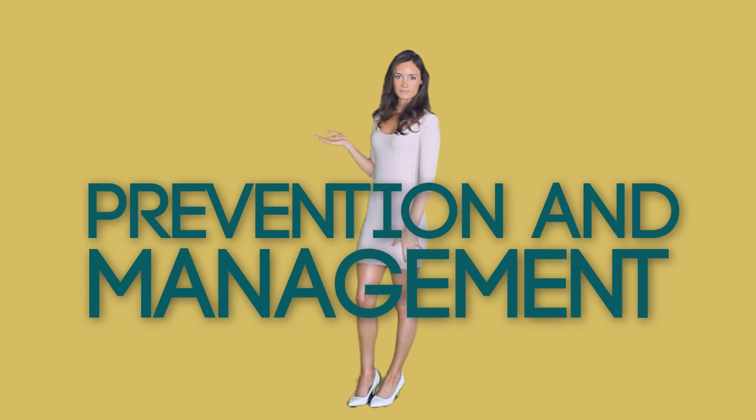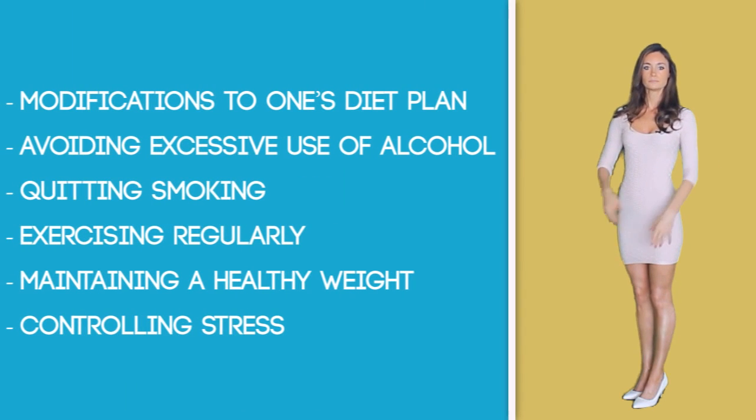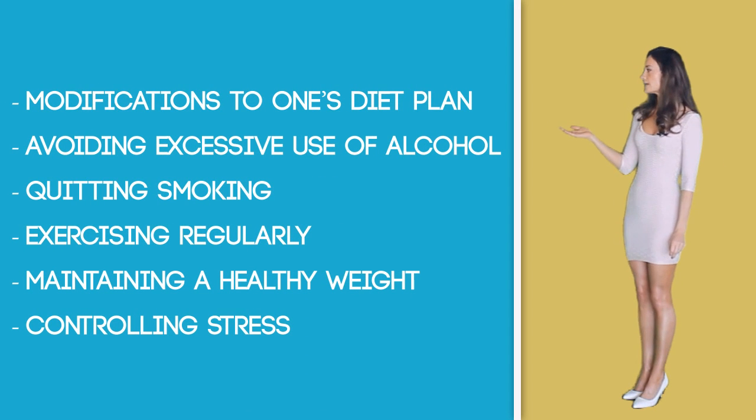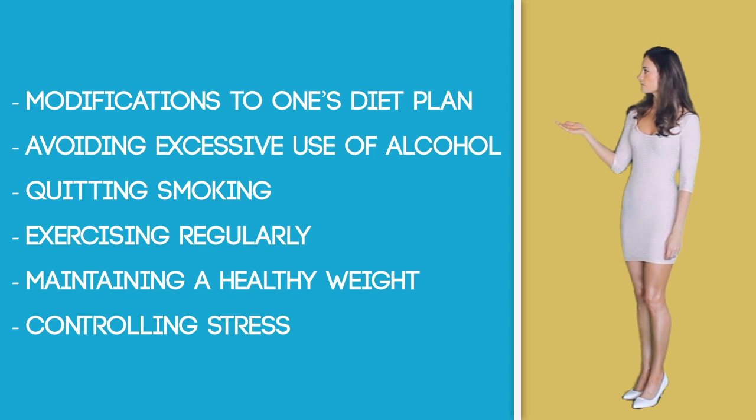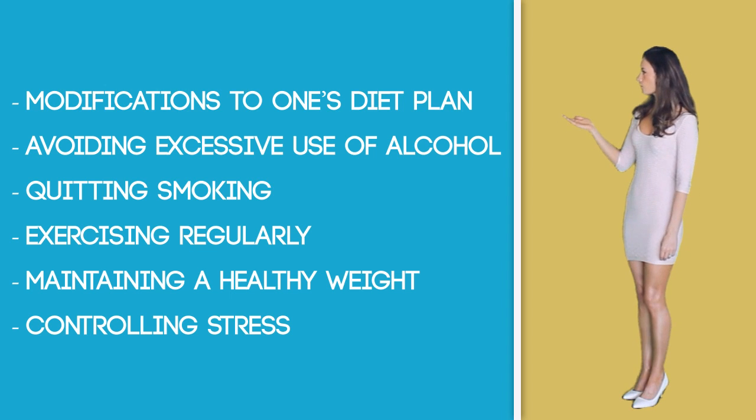For example, the patient may need to consult a nephrologist to determine the severity of damage to the kidneys. Usually, the younger the patient and the higher their blood pressure, the more extensive the treatment plan. Prevention and management — lifestyle changes are most often necessary. Bringing changes into one's lifestyle plays an important part in preventing and even managing hypertension without medications. Some possible ways include modifications to one's diet plan including eating more fruits and vegetables and less sodium, avoiding excessive alcohol, quitting smoking, exercising regularly, maintaining a healthy weight, and controlling stress.